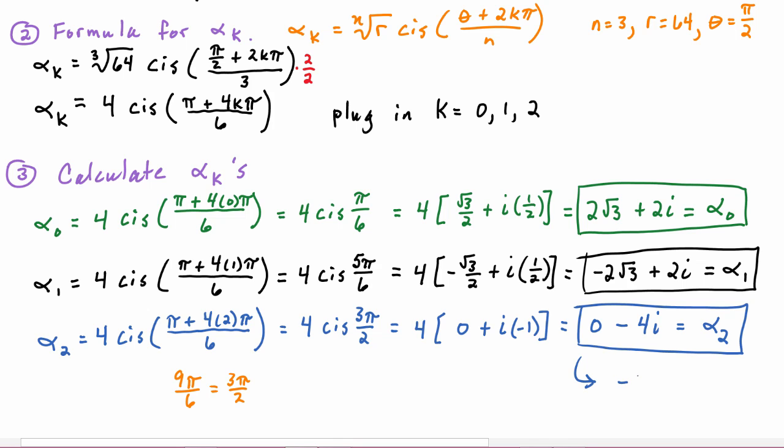Or you could write this one as just -4i - either way of writing this is equally good. And these are the three cube roots which would solve that original equation of x³ - 64i = 0.